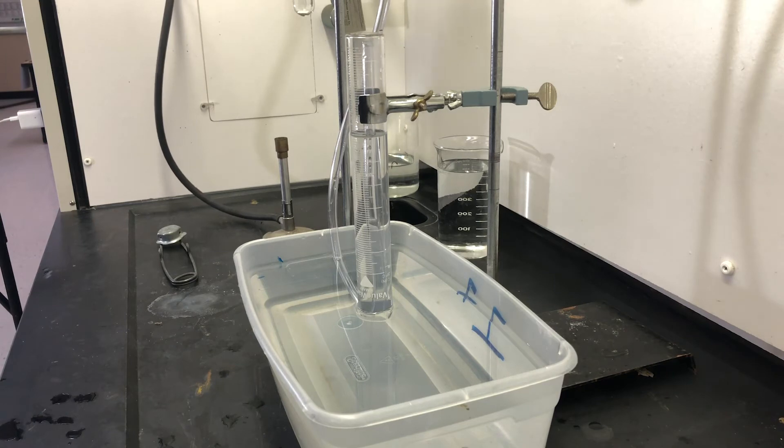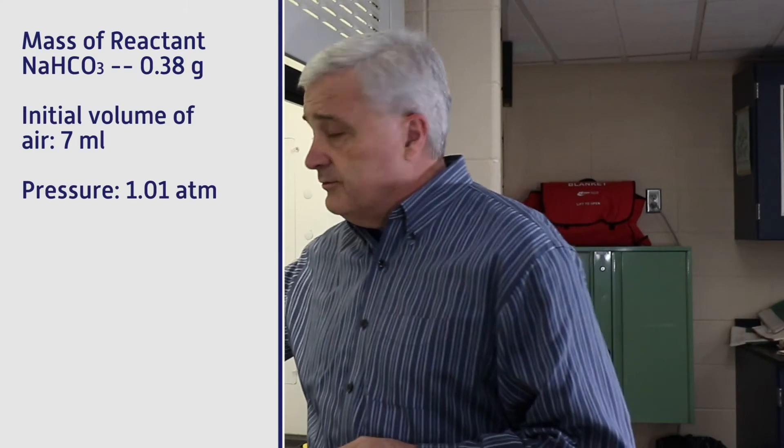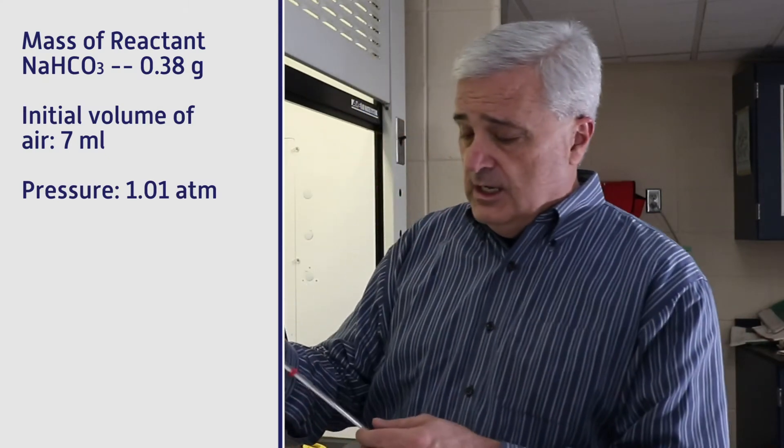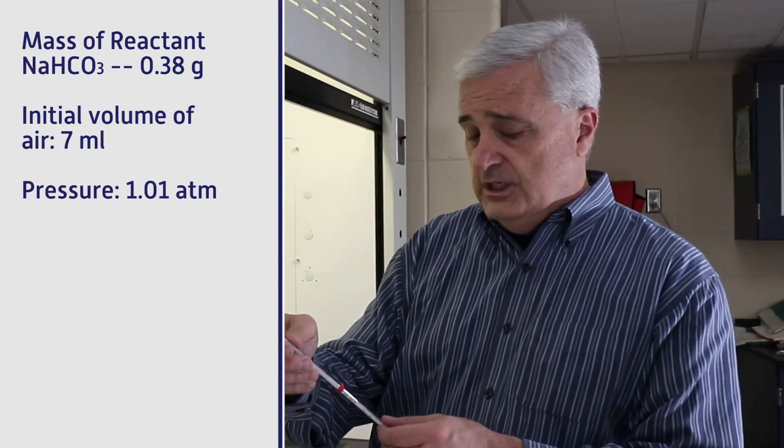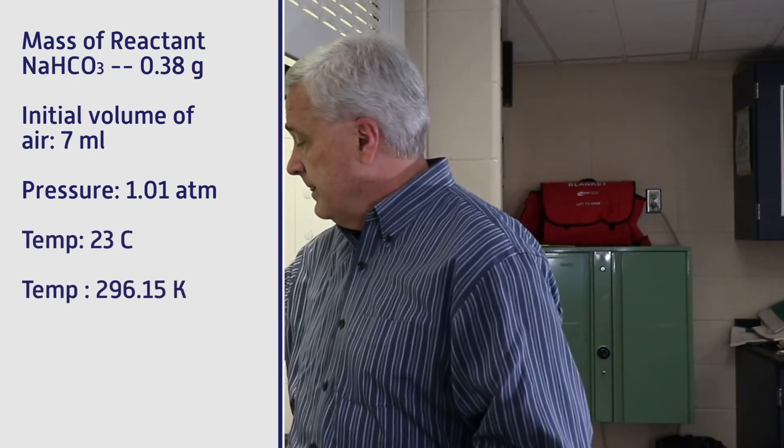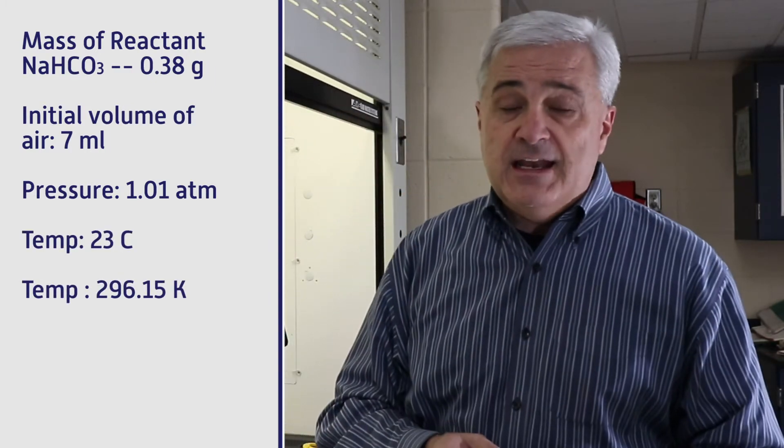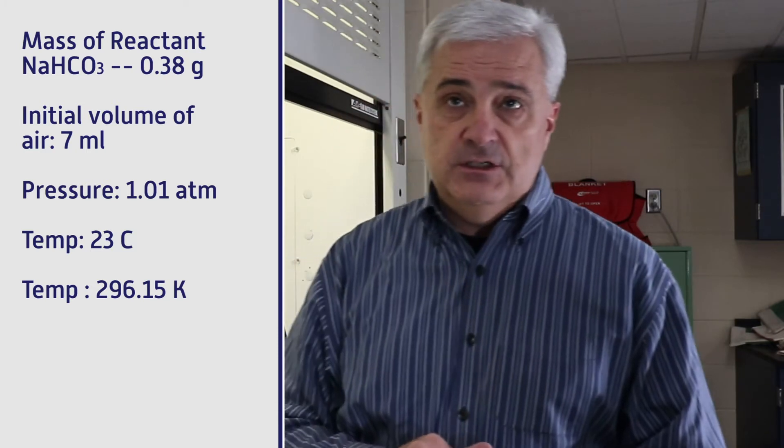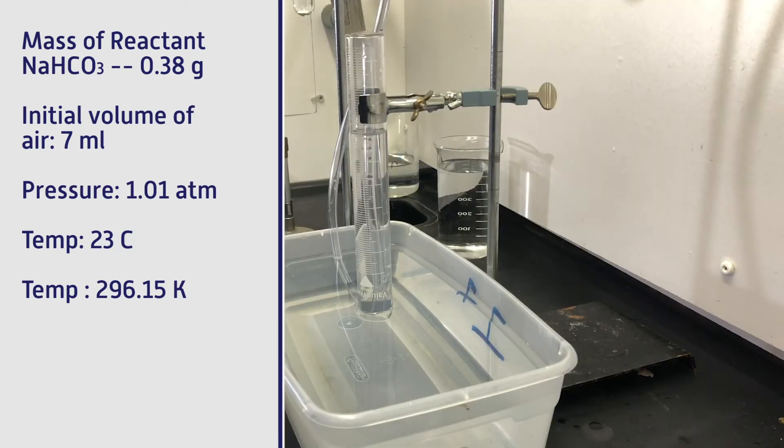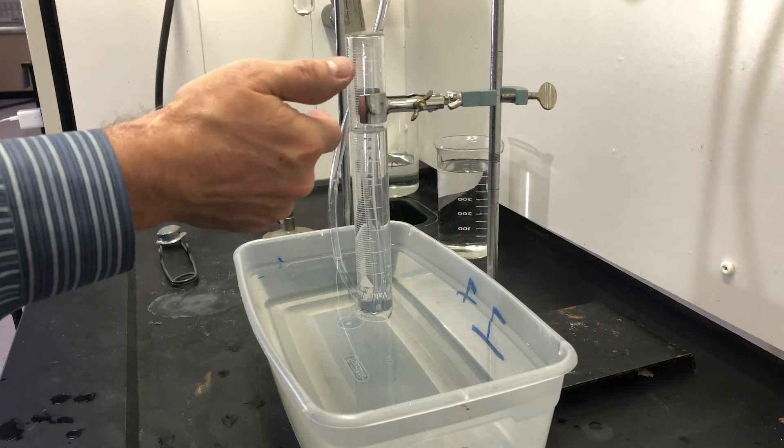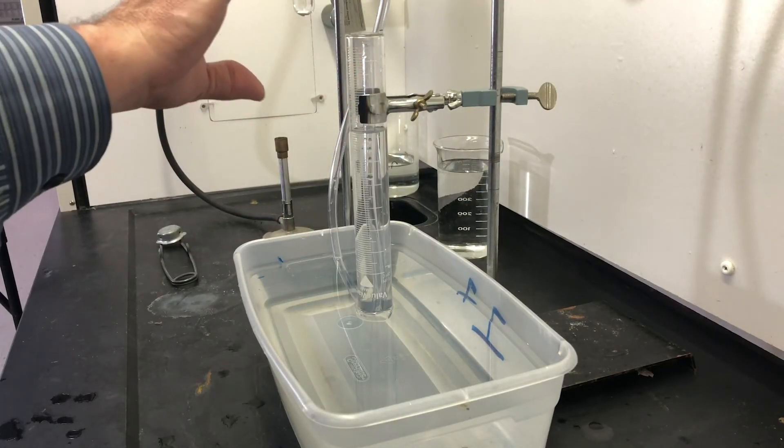Now at this point, we need to get the barometric pressure, which I'm going to collect that off of a weather app. And I'm going to take the room temperature, and that is 23 degrees Celsius. So I'm going to have to convert that into Kelvin, 296. Now this has to cool down. After it cools down, as the gas in here cools, it's going to retract gas out of here and give us the actual amount of new gas that came in.